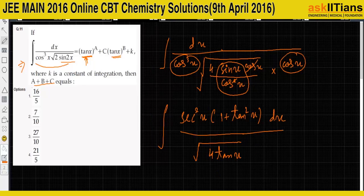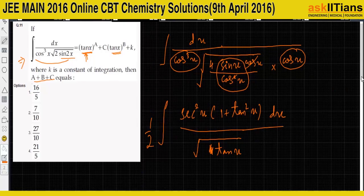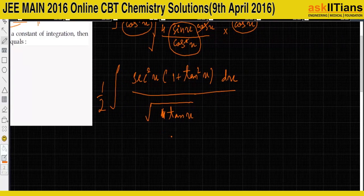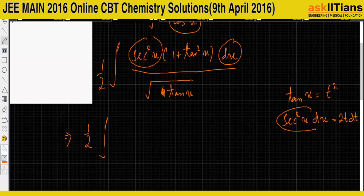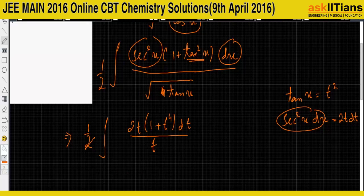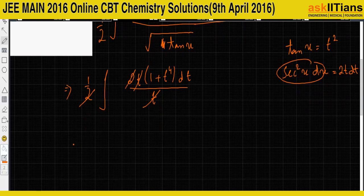Taking √4 = 2 outside gives a factor of 1/2. Since we have a square root of tan(x), let tan(x) = t², so sec²(x) dx = 2t dt. Substituting: the 2's cancel and t from the denominator cancels with t from the numerator, giving a simple integral of (1 + t⁴) dt.